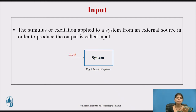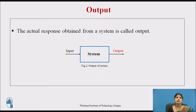First, input. Input is the stimulus or excitation applied to a system from an external source in order to produce the output. Then output — output is the actual response obtained from the system. As you can see in figure 2, when input is applied to the system, output will be generated accordingly.